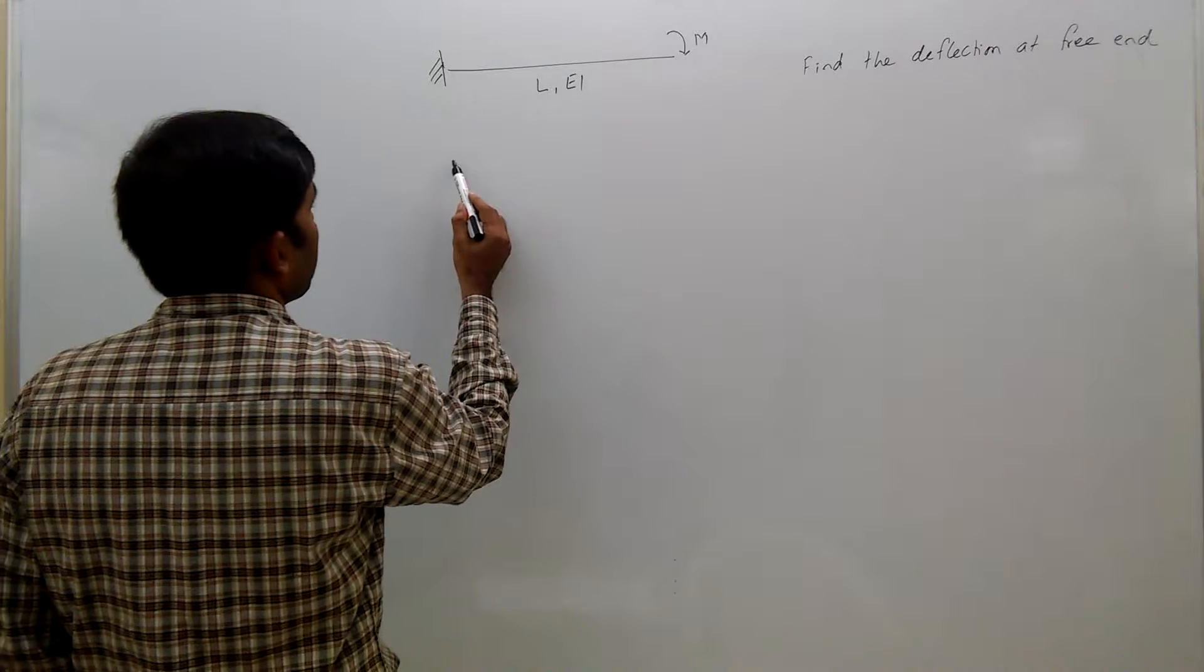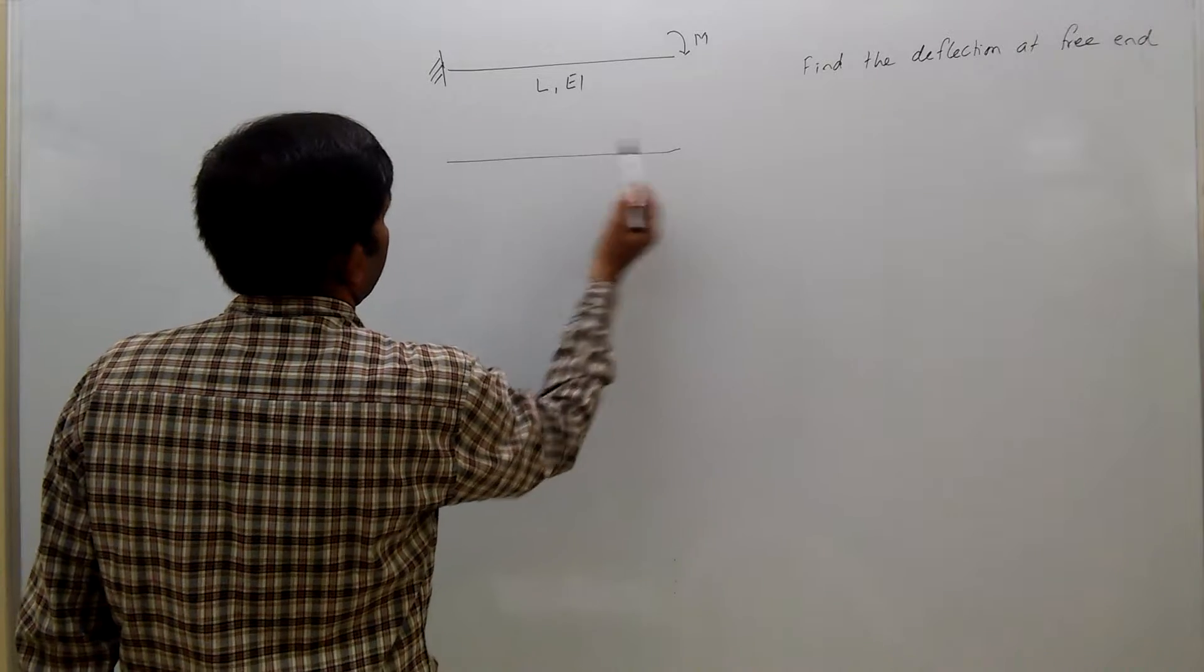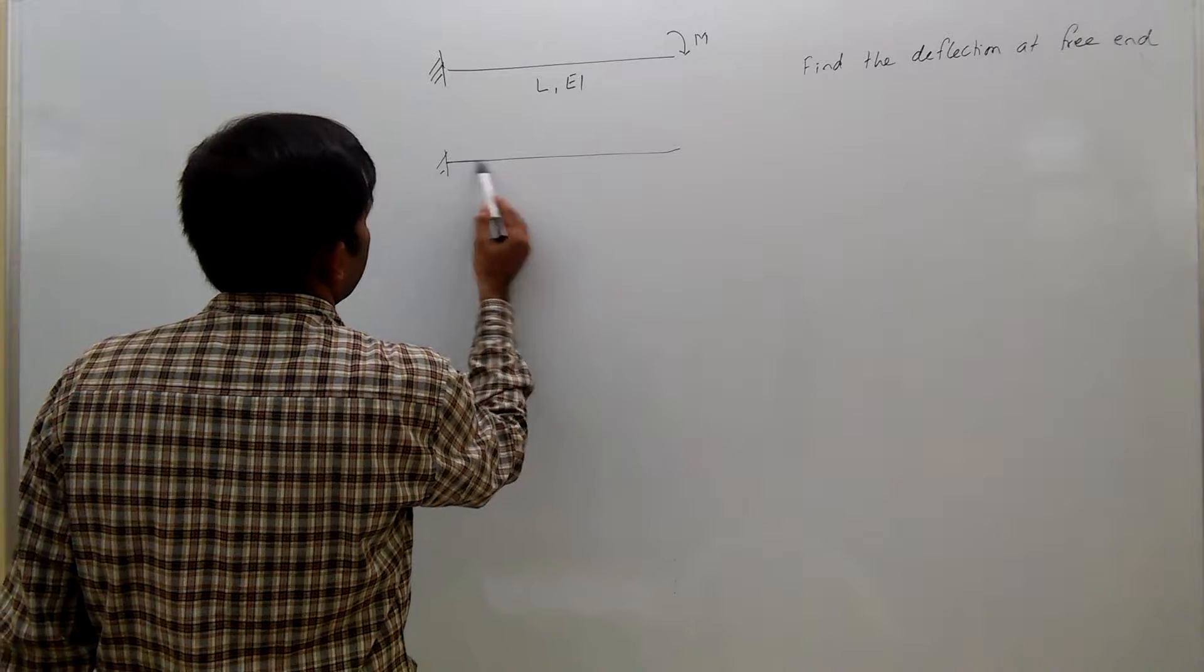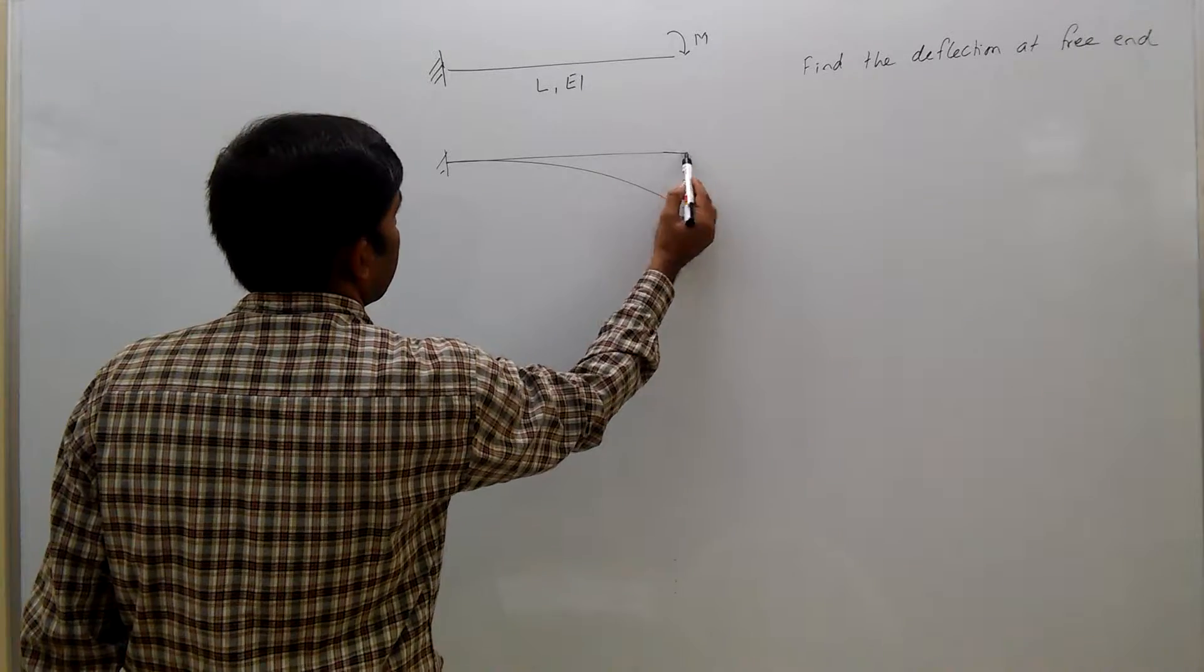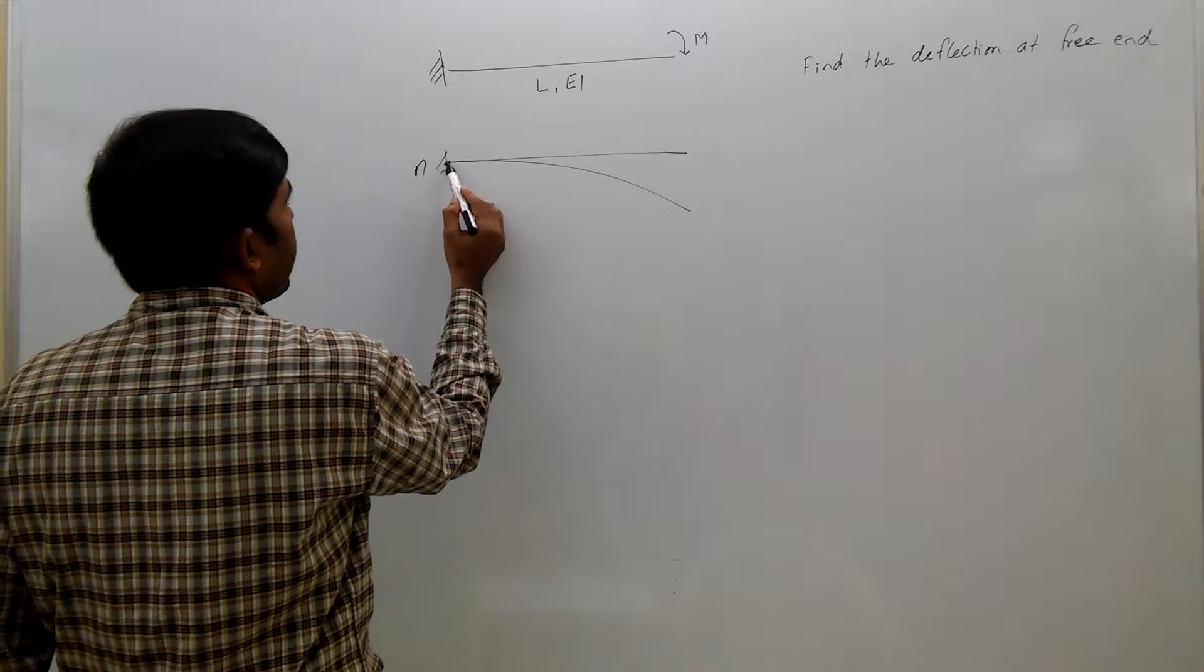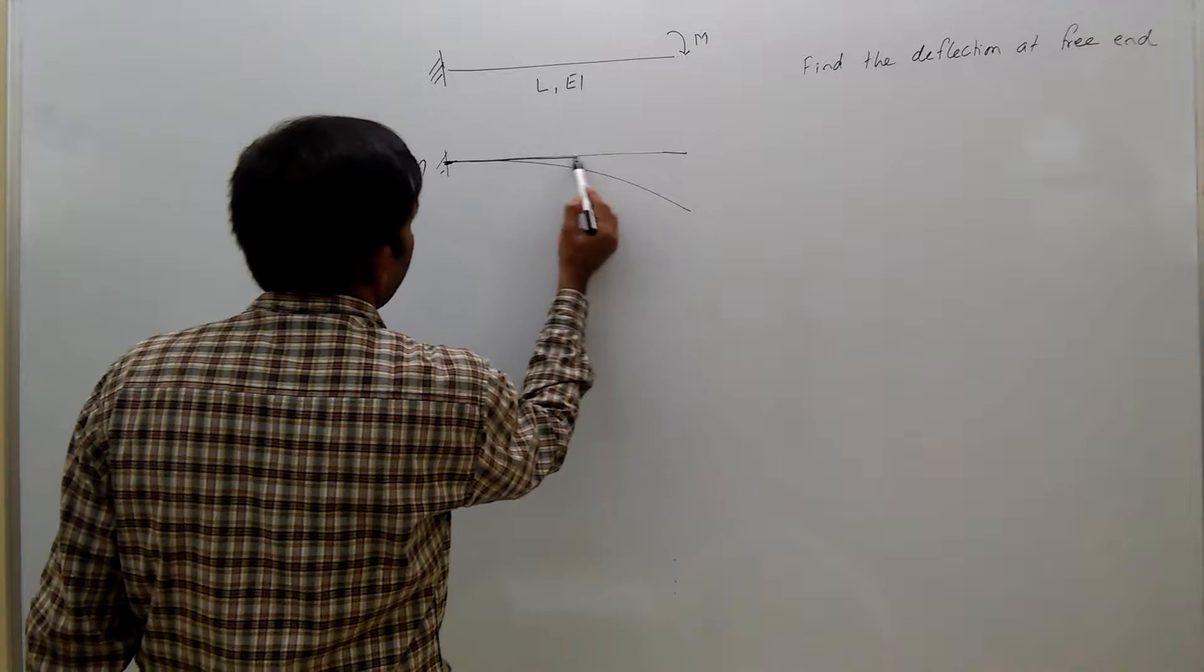The elastic curve will be like this. If this is point A, and you draw a tangent at this point, it will be horizontal.